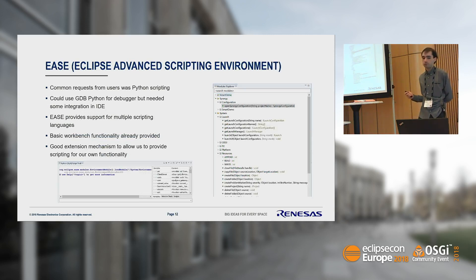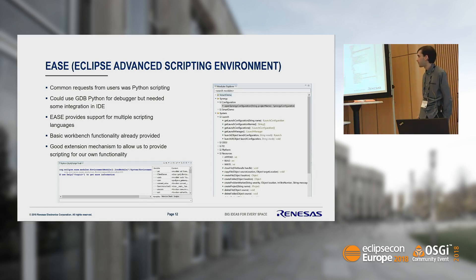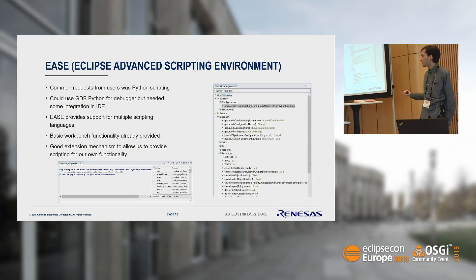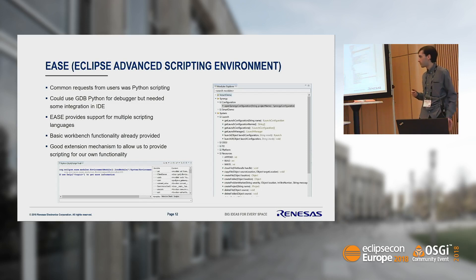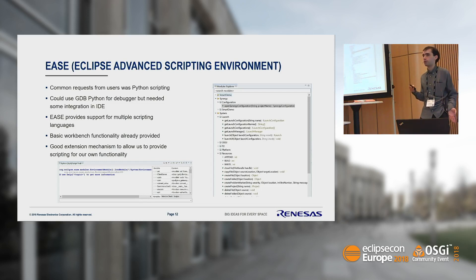EASE, the Eclipse Advanced Scripting Environment, allowed us to satisfy a request for scripting in the IDE. When we initially launched eSquare Studio we provided some support for Python scripting via GDB, but customers quickly wanted to script other aspects of the IDE. EASE provides support for multiple scripting languages — Python being the main one we support, but if a customer wants to use JavaScript they can. EASE also provides a lot of basic workbench functionality such as opening and closing projects and adding and deleting files, and it has a very good extension mechanism for us to provide our own modules. I'll now hand over to Pio to talk about some additional functionality we developed using EASE.